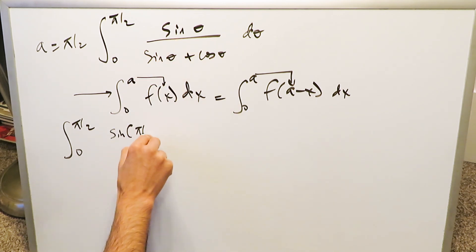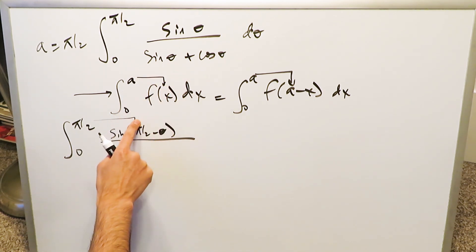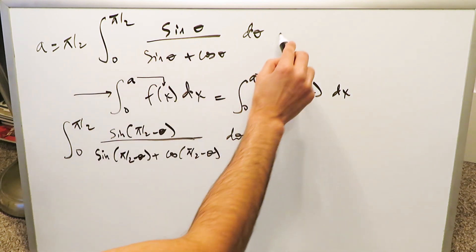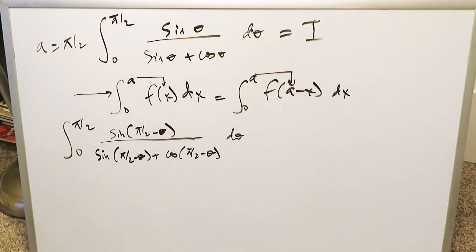You're getting here sine(π/2 - θ). You see how the π/2 has come right over here? And you'll do the exact same thing with the denominator functions. You'll have here sine(π/2 - θ) plus cosine(π/2 - θ), dθ. This right here represents an original integral which I'm calling an I. It represents an integral. My original integral, we're calling that an I.